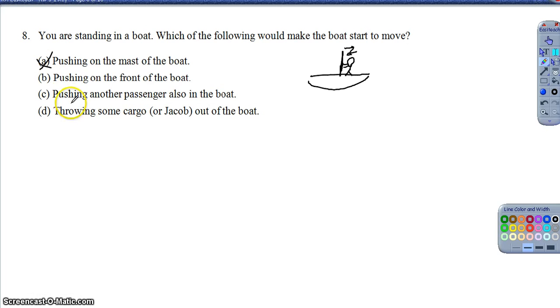So for part B, pushing on the front of the boat. Well again, if you're standing in the boat, if I push on the front of the boat, I push this way, the boat pushes right back, I'm not actually gaining any motion with respect to the water. Pushing on another passenger also in the boat, again, if there's two people in the boat and you're pushing, the force is completely within the system. So all of these are examples of internal interactions that don't affect the overall motion of the boat.